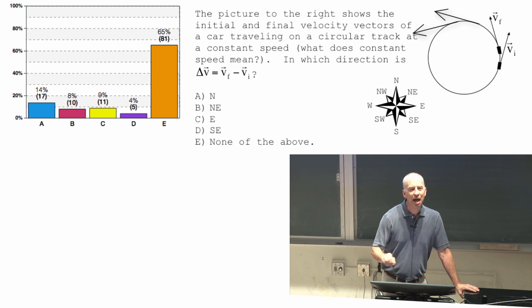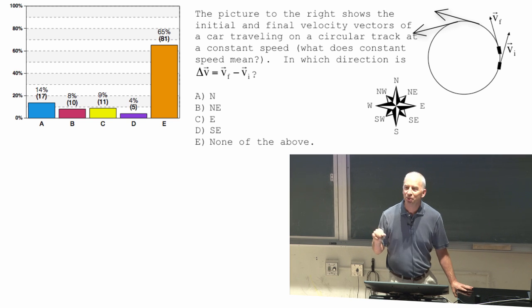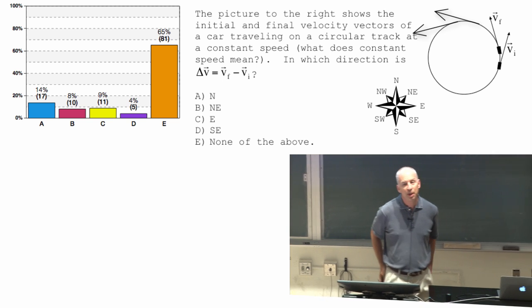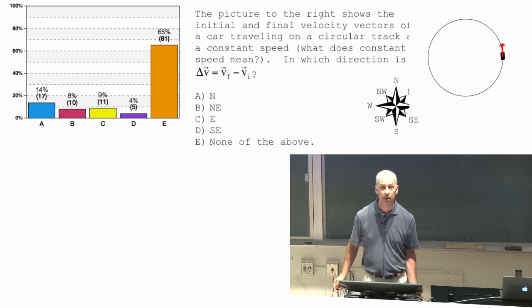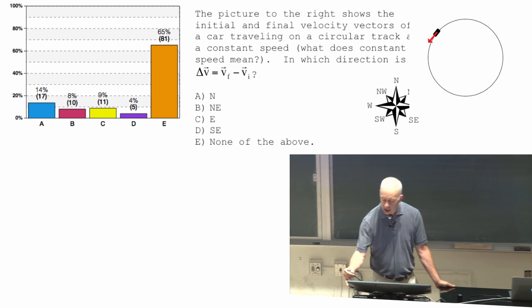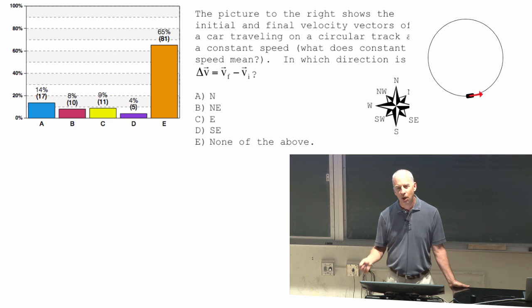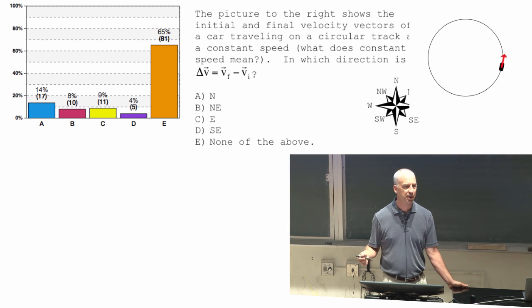If something is going around in a circle at a constant speed, you're going to find, whenever you want to figure out the change in the momentum or the change in the velocity, that it always points toward the center of the circle. The velocity vector is changing all the time. It's changing its direction all the time. And it turns out it's always changing toward the center of the circle that it is going around.